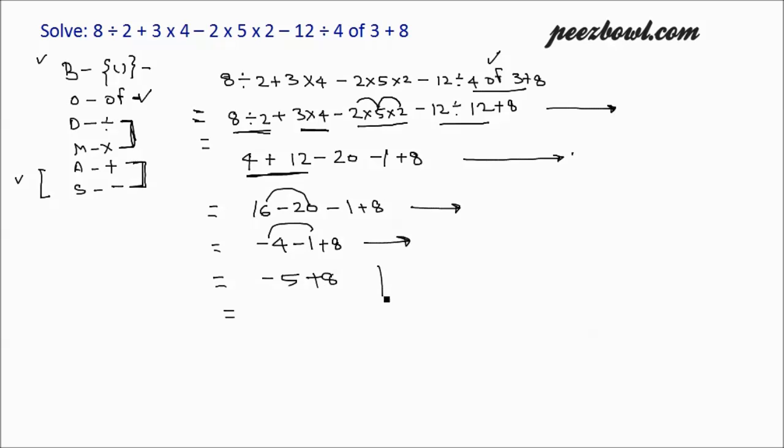And again minus 5 plus 8, or this can also be written as plus 8 minus 5; these both have same value. So minus 5 plus 8, or 8 minus 5, will be 3. This is the answer of this arithmetic expression. 8 divided by 2 plus 3 multiplied by 4 and so on will have a value of 3. This is the answer. Thanks for watching.